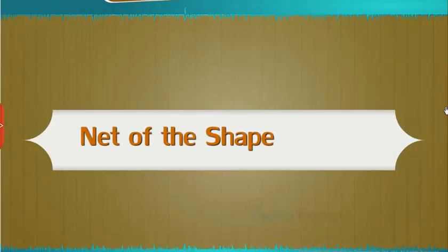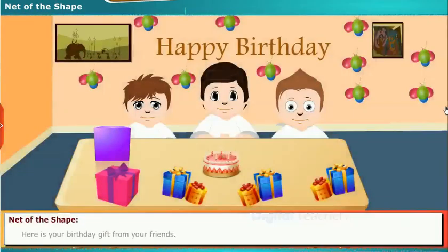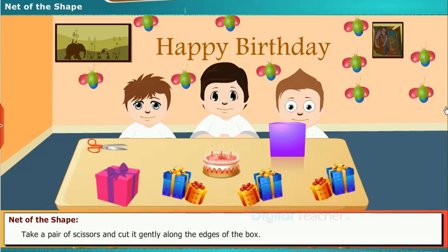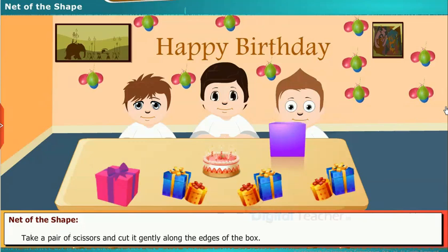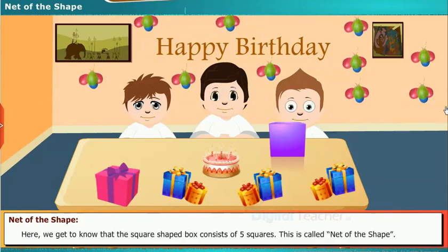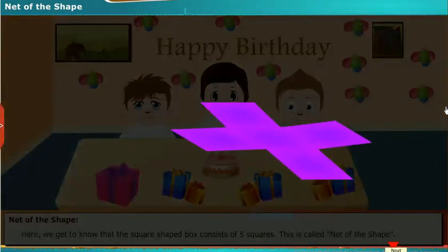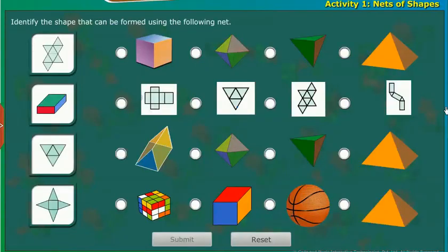Now we will discuss about the shapes of some more objects by opening it completely. Here is your birthday gift from your friends. Put the item aside and have a look at the box. Take a pair of scissors and cut it gently along the edges of the box. Here we get to know that the square shaped box consists of five squares. This is called net of the shape. Let us do an activity to identify the nets of shapes. Identify the shape that can be formed using the following net.